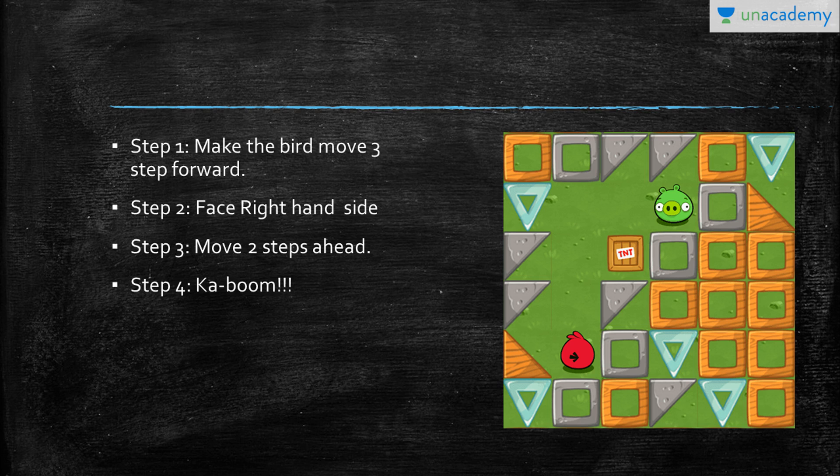After that, we want to make it walk two steps ahead—one and two. And that's it, done. We have reached the pig and the task is complete. So this is one of the major things that we have to follow in instructions: they should be specific and correct.